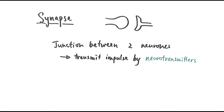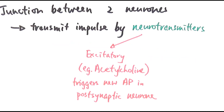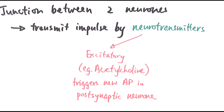There are different types of neurotransmitters, because sometimes we want the nerve impulse to carry through, but sometimes we want it to not transmit the signal any further. An excitatory neurotransmitter like acetylcholine can trigger a new action potential to be generated in the neuron after the synapse — hence we call it the post-synaptic neuron.